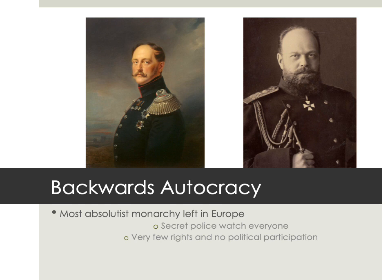Alexander III instituted a secret police that watched pretty much everyone. Even teachers and university professors had to send the secret police detailed reports on all of their students, letting them know if there was any hint of any sort of revolutionary activity at all. There was very strict censorship, no freedom of the press whatsoever, basically no real rights, especially political rights, no political participation. Everything started and ended with Alexander III and his ministers at the very top.